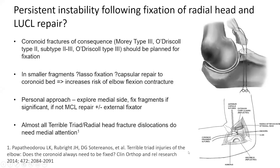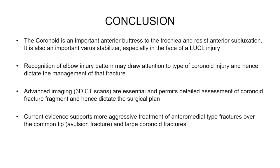In some instances, medial exploration has found complete medial collateral ligament disruptions which, when repaired, restored stability. In summary, we need to appreciate the importance of the coronoid as a buttress and resistor to anterior subluxation of the trochlea. Coronoid fractures can occur in multiple and varied elbow injury scenarios, and recognition of this is indispensable when planning a surgical management strategy. Currently, there is a growing consensus supporting more aggressive treatment of anterior medial facet fractures and fractures involving more than 50% of the coronoid.